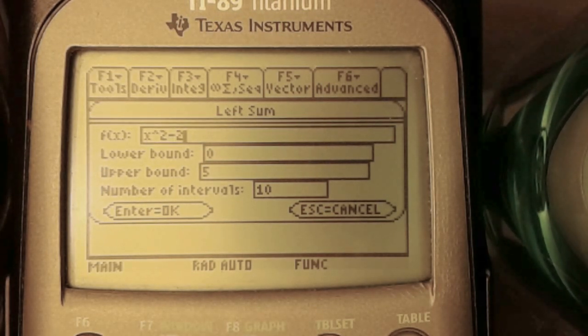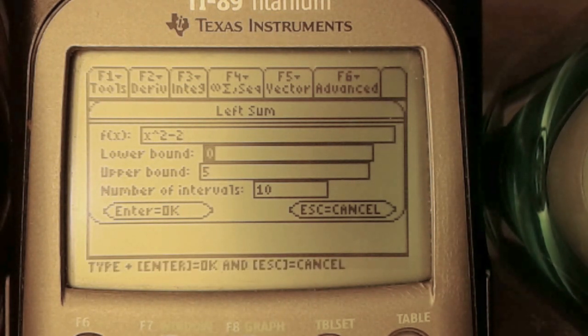Now we can set the lower and upper bounds to find the area under the curve at a specific interval. Let's use something easy: lower bound 0 and upper bound 5.